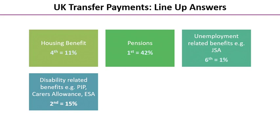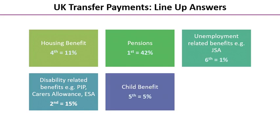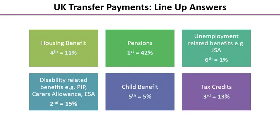Disability-related benefits — including the Personal Independence Payment (PIP), Carer's Allowance for those who look after people with disabilities, and Employment Support Allowance — combined put it into second place at 15%, though still well below pensions. Child benefit, available to all households with up to two children, accounts for 5% of welfare spending. Tax credits, tied in with income support to help working families who don't quite have enough income to get by, come in third place.